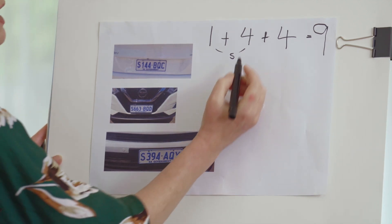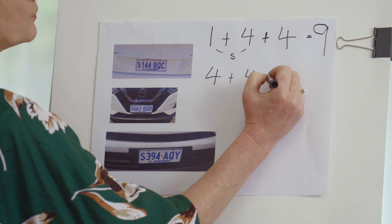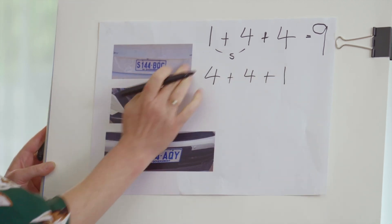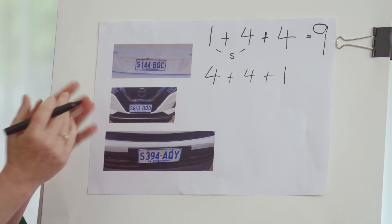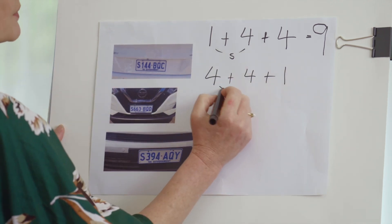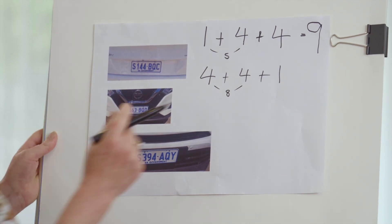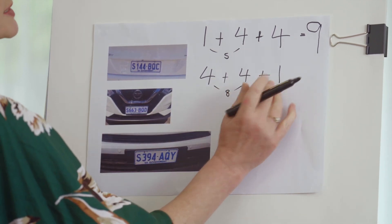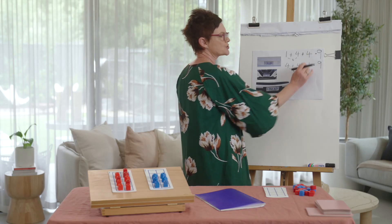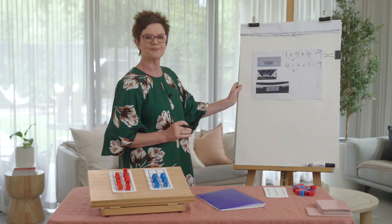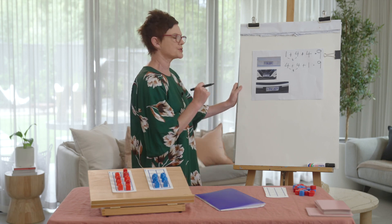I do have a love of doubles, so if I move the numbers around — and I know I can put them in any order — I'm going to look at my double four, which is eight, and then eight plus one. There we go — I have the same total of nine in two different ways of addition.